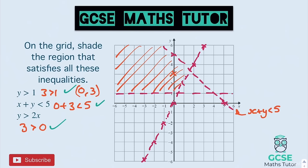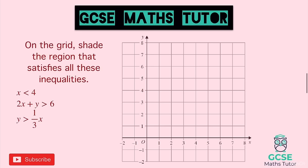That was the first example where the shaded region is not within the triangle formed by the lines. It shows that you might need to test a few coordinates in different places to find the correct region. The logical approach is to think about which side of each line satisfies the inequality, and that narrows it down. Let's look at the next question: on the grid, shade the region that satisfies these three inequalities.